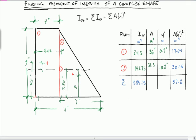So plugging that into our equation, i x-axe is equal to sum of i x-axe plus the sum of a y-prime squared, we get 384.75 plus 37.8. And we sum them up, we get i x-axe is equal to 422.55 inches to the 4th.